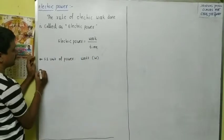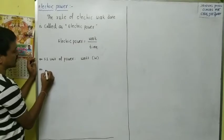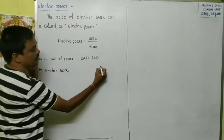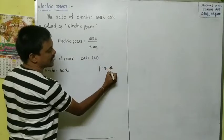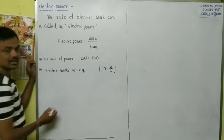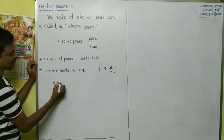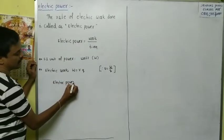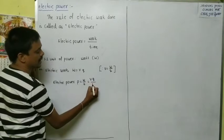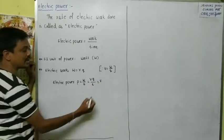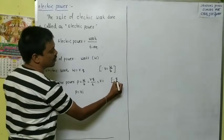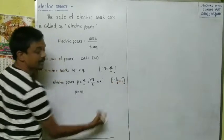From here, electric work can be written in terms of potential difference. We know the potential difference formula is work by charge. From that, work is equal to potential difference into charge. We substitute this in the above equation. Then we get: electric power P is equal to work by time, that is potential difference into charge by T. But potential into charge by time is current.